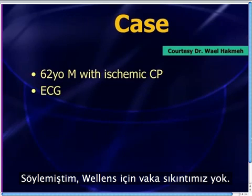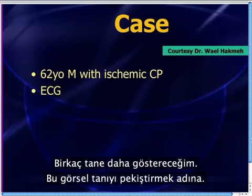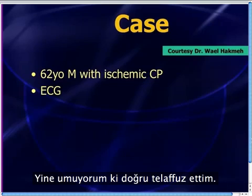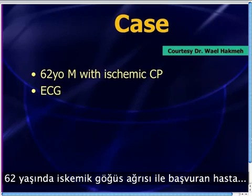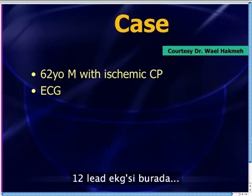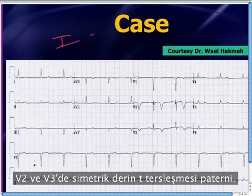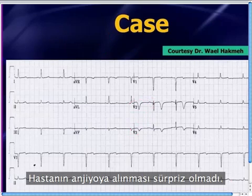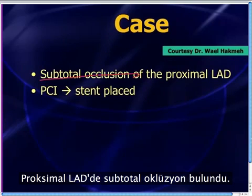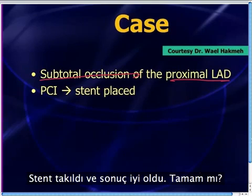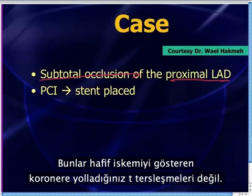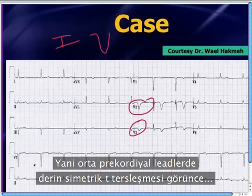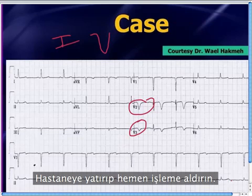There's no shortage of Wellens cases. Here's one sent by Dr. Wael Hakme, who works in Pontiac, Michigan. He had a 62-year-old man that presented with ischemic chest pain. This is the type 1 pattern with the deep symmetric T-wave inversions in V2, V3 — your EKG machine is going to pick this up. No surprise: this patient went to the cath lab and was found to have a subtotal occlusion of the proximal LAD, got a stent, and had a good outcome. These are not just flipped T-waves indicative of mild ischemia. These are patients with critical LAD occlusions — so when you see these huge symmetric inverted T-waves in those mid-precordial leads, you take them seriously and get them admitted and urgently managed.